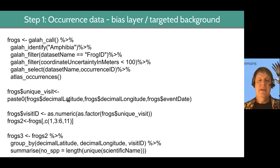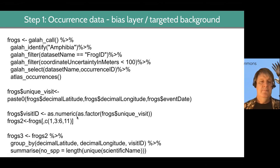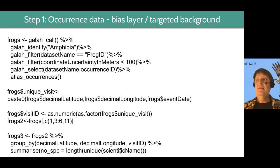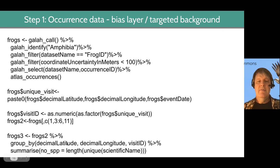Then we're going to subset that data, taking only the columns we're interested in. We're going to summarize: for every unique latitude, longitude, and visit ID, how many unique scientific names were identified? That gives you an idea of species richness in each of those cells. So frogs3 gives us an understanding of, for every lat/long and visit ID, how many species were observed at those locations.